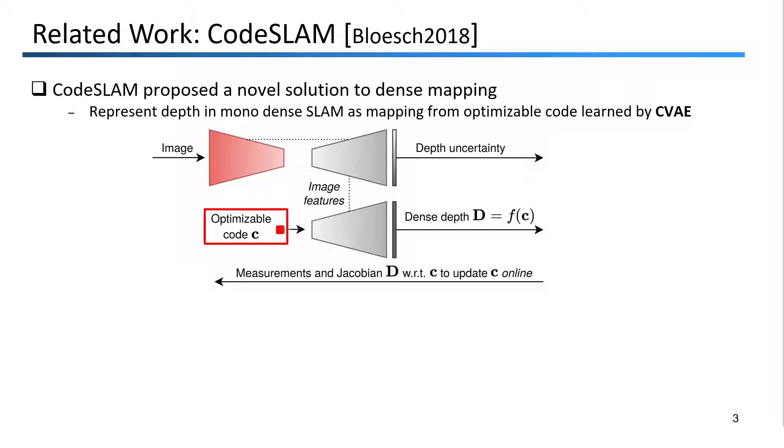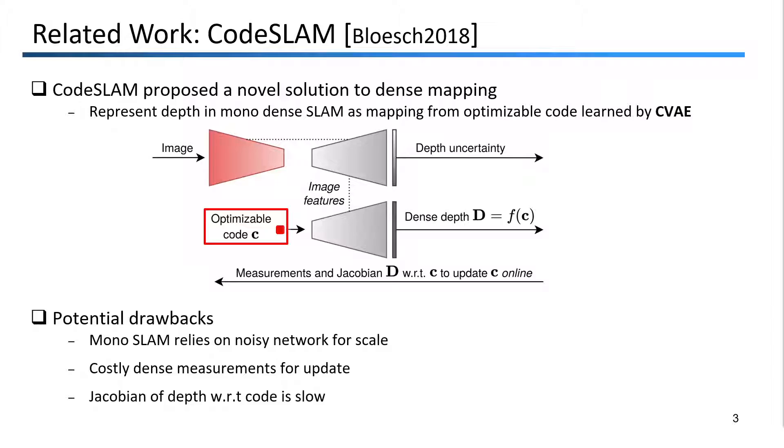While CodeSLAM provided a novel and interesting formulation for dense mapping, there are still some potential drawbacks. First, their monocular SLAM system relies on the neural network's depth for scale, but single-view depth networks can be fairly unreliable on data that it has not seen in training. Second, they use completely dense measurements from photometric warping for the code update, which can be quite costly. Finally, although they only calculate it once per frame, the computation of the Jacobian with respect to the code is still a bottleneck in their system.